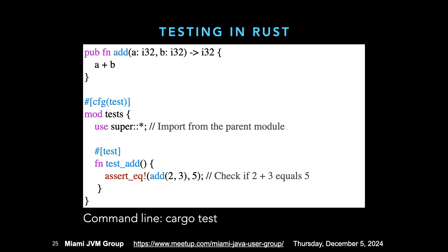An interesting thing about Rust is that documentation format like Javadoc is built into the language definition. The unit testing is also built in — unlike the Java world where you bolt on different test environments. You have a command line where you can run cargo test, and you can have your unit tests built directly into the source files without separate test files.